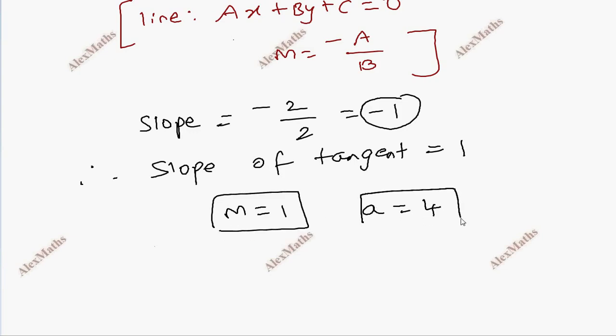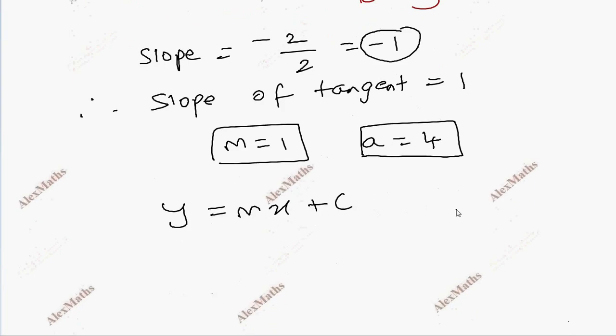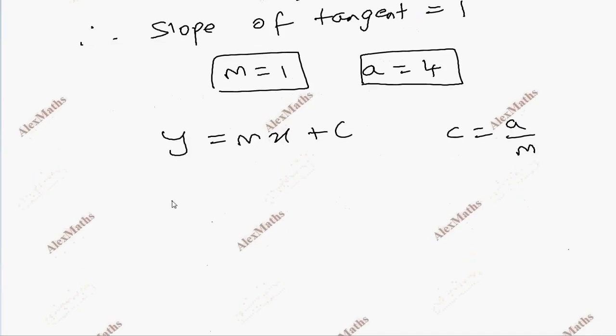We have m value is 1 and a value is 4. For the tangent y equals mx plus c, the condition is c equals a by m. Substitute: y equals mx plus a by m.